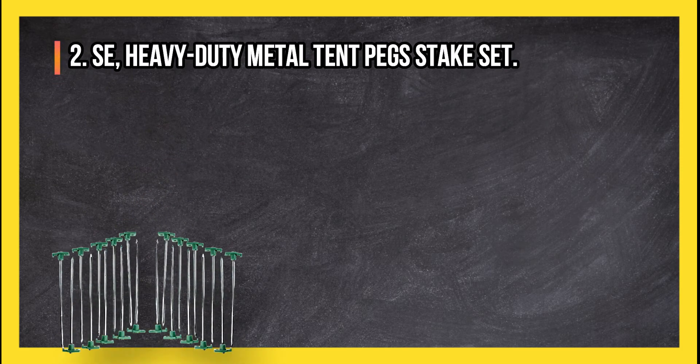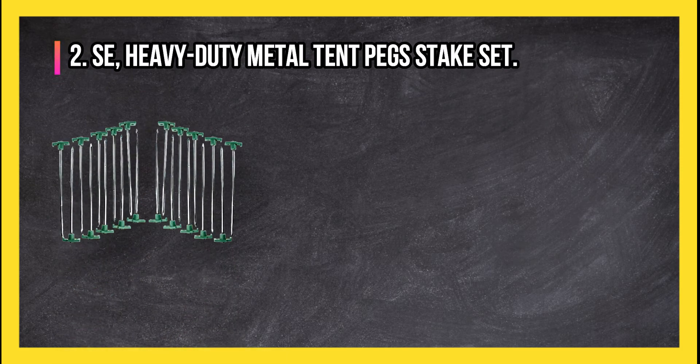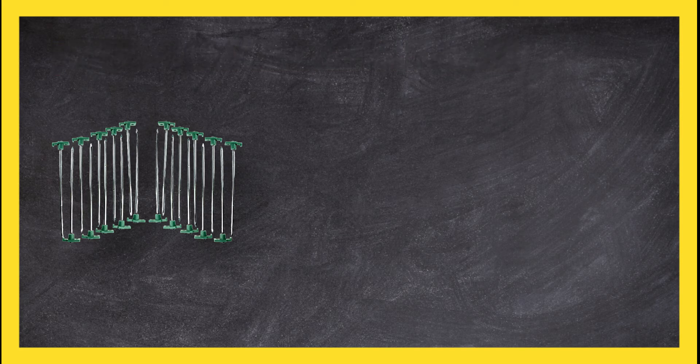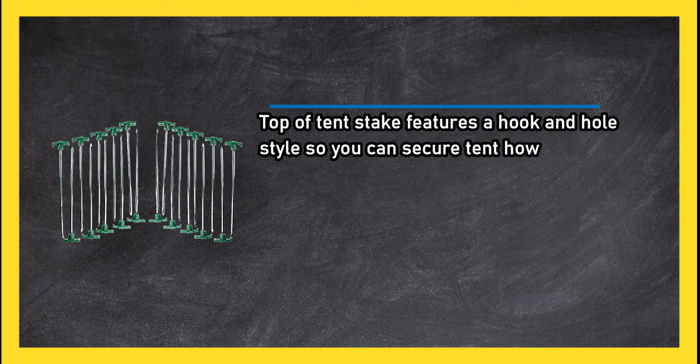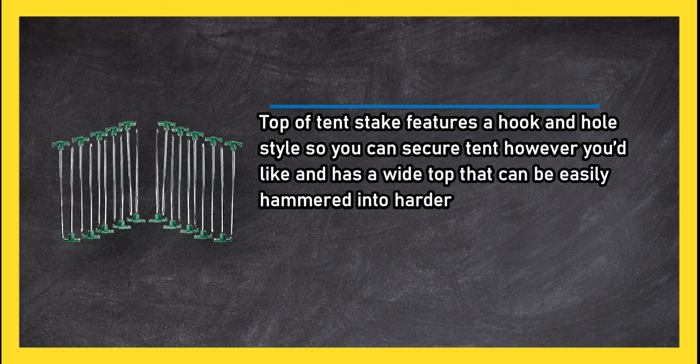At number 2, SE Heavy Duty Metal Tent Pegs Stakes Set. Top of tent stake features a hook and hole style so you can secure it however you like and has a wide top that can be easily hammered into harder ground.